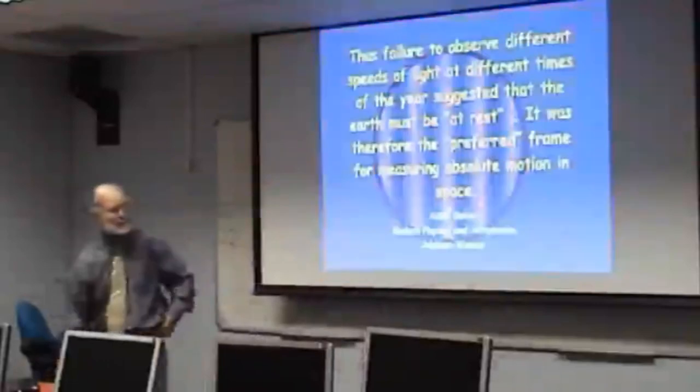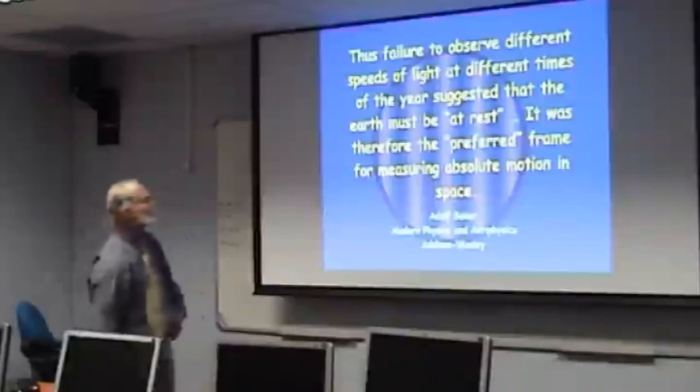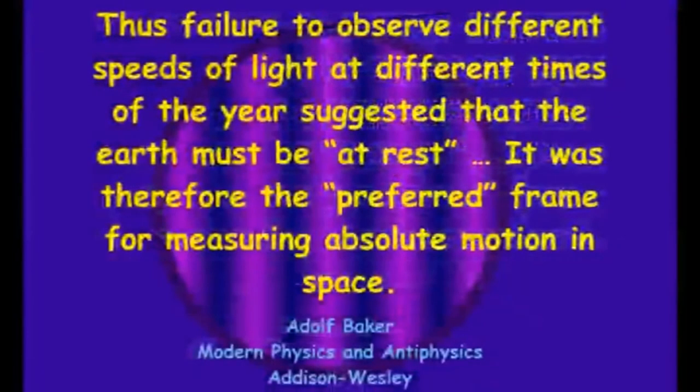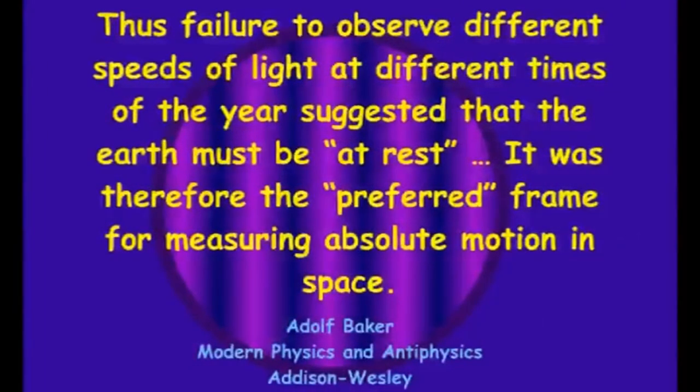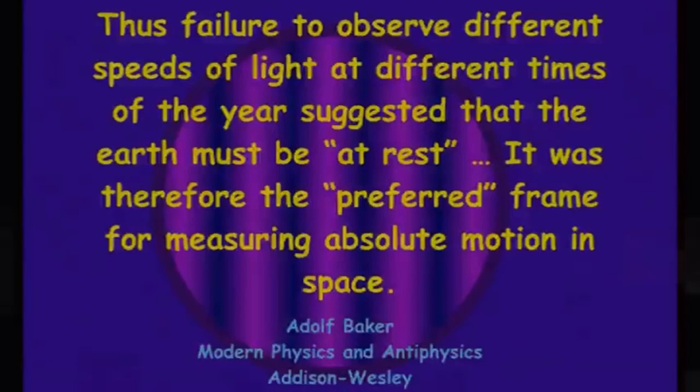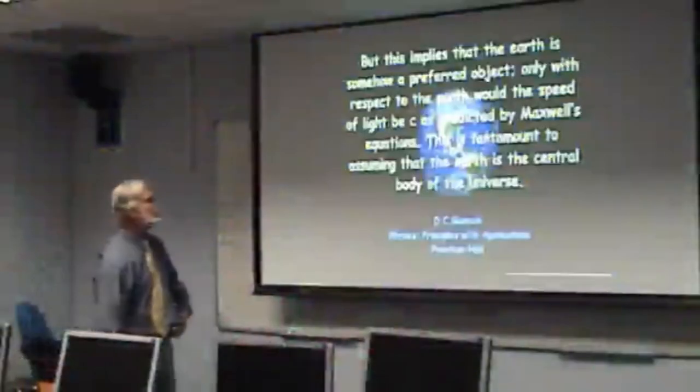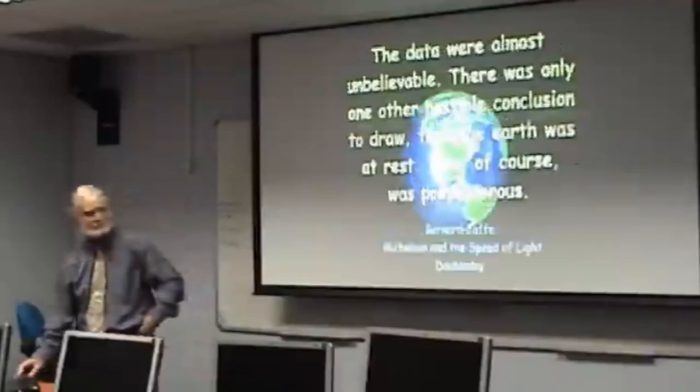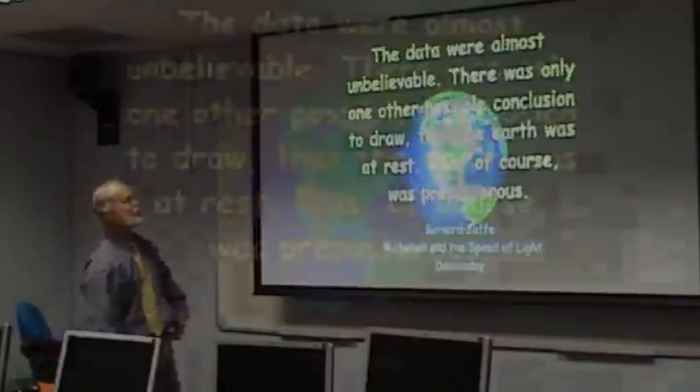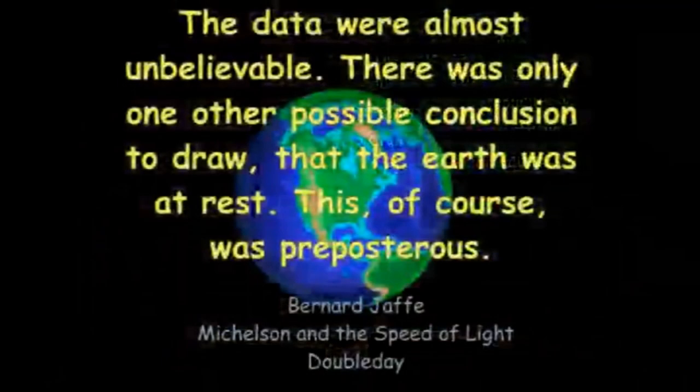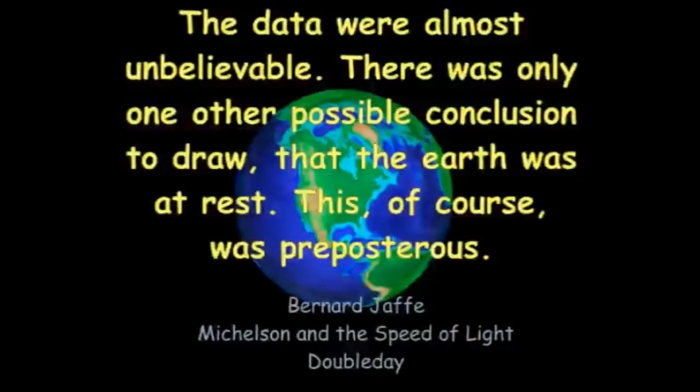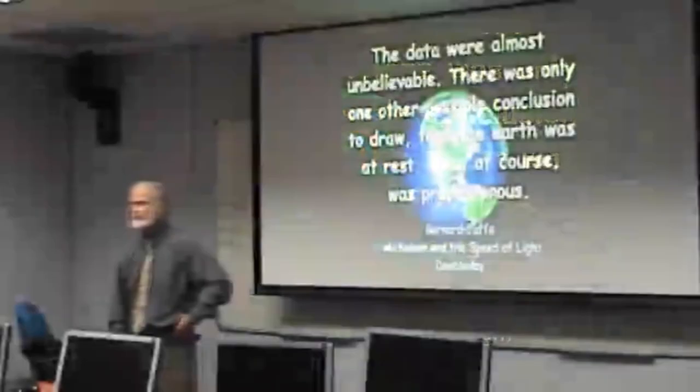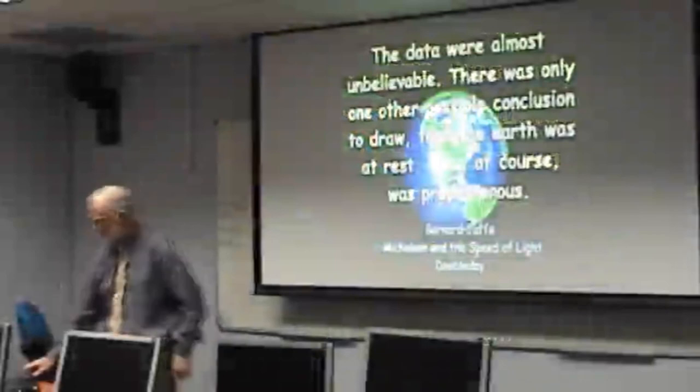It's interesting to see what scientists have said about this. Adolf Baker, for example: failure to observe different speeds of light at different times of the year suggested that the Earth must be at rest. It was therefore the preferred frame for measuring absolute motion in space. Gian Colley said but this implies that the Earth is somehow a preferred object. Only with respect to the Earth would the speed of light be seen as predicted by Maxwell's equations. This is tantamount to assuming that the Earth is the central body of the universe. Ben and Jaffe said the data were almost unbelievable. There was only one other possible conclusion to draw, that the Earth was at rest. This, of course, was preposterous.